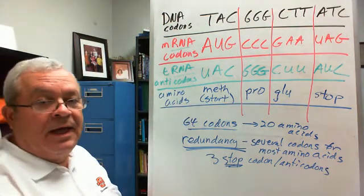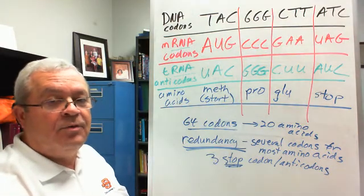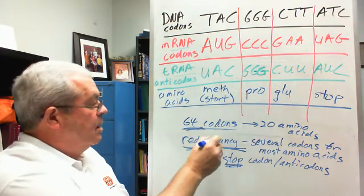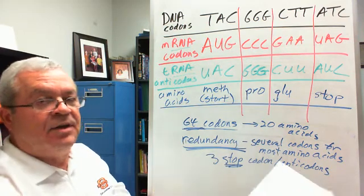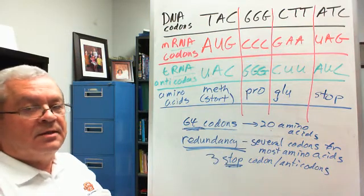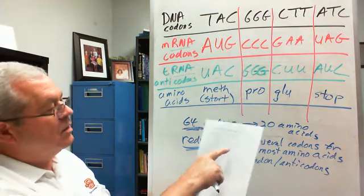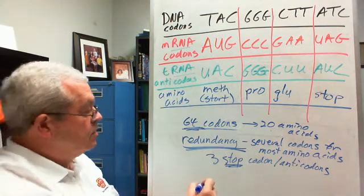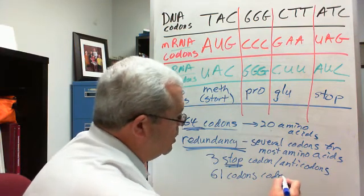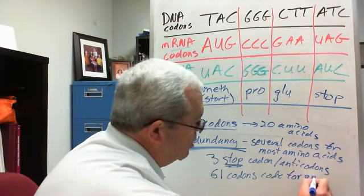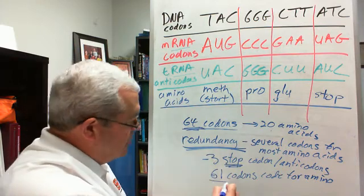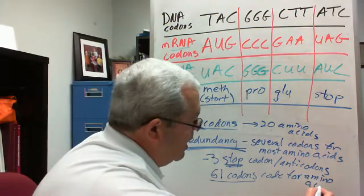That means only how many codons actually code for amino acids. There's how many codons total? 64. And three are STOP codons, nothing else, just STOP. So how many of these 64 codons actually code for one of those 20 amino acids? Not all 64. You've got to take out the three STOP codons. So only 61 codons and anticodons code for amino acids. Not all 64. There's three STOP. You've got to take those out. And that leaves 61 codons coding for amino acids.